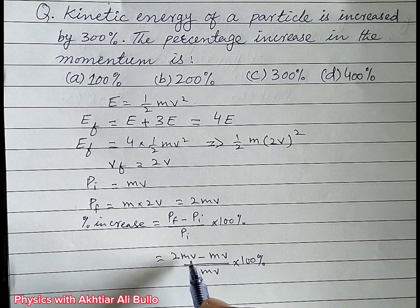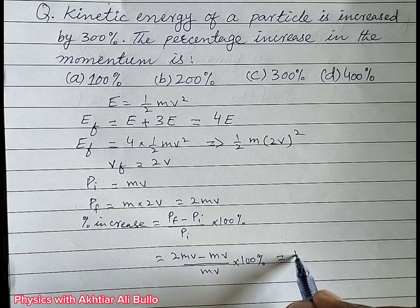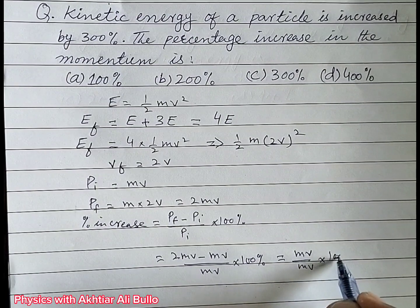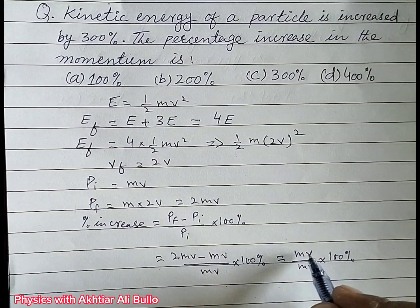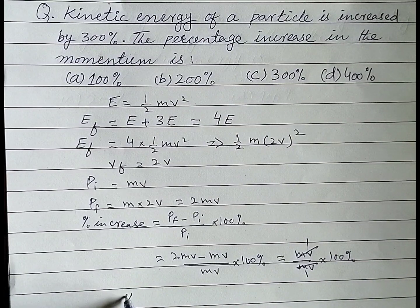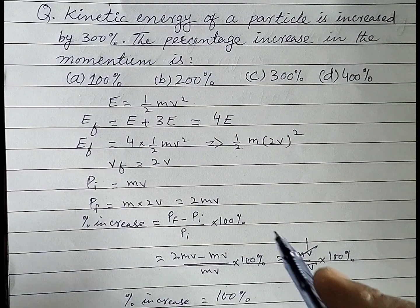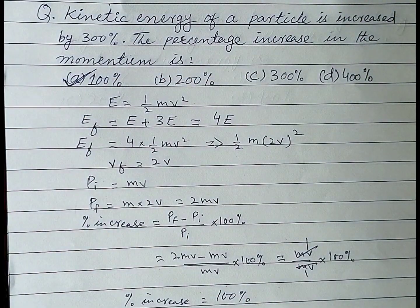So Mv cancels with Mv, giving 1 times 100%. The percentage increase will be equal to 100%. So the correct option will be A: 100%.